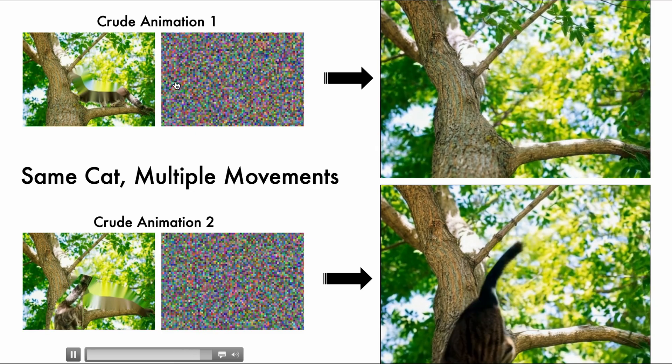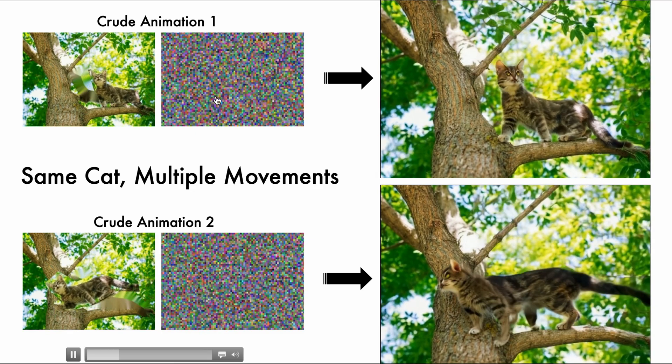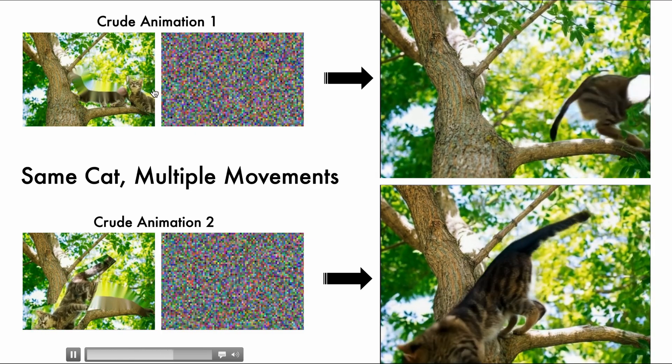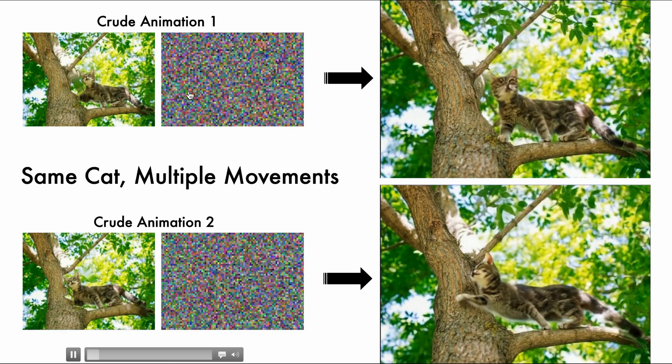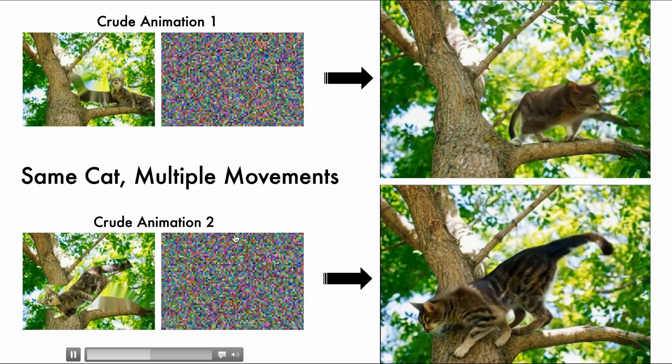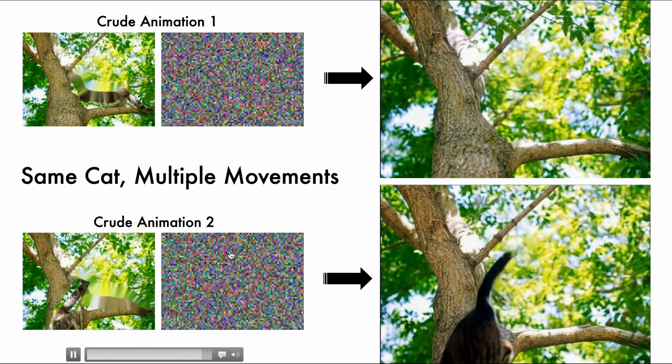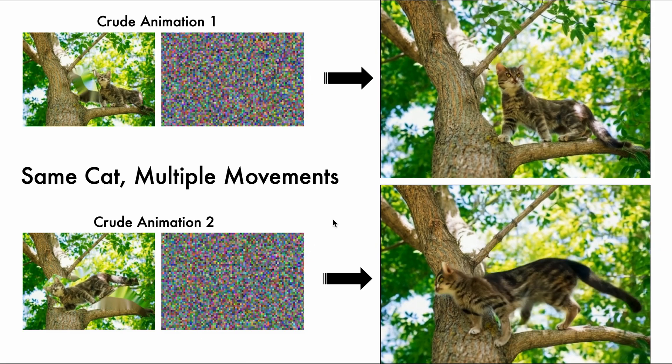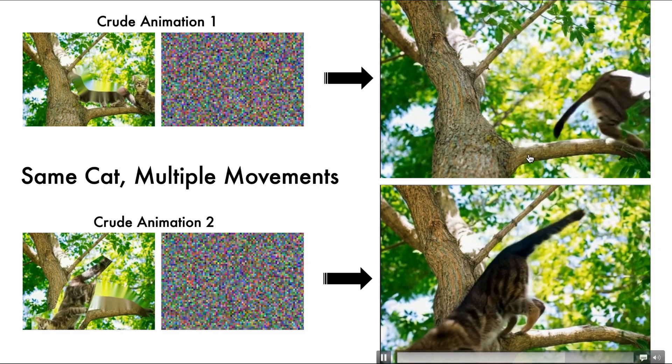And we can control the direction of the cat by dragging it from left to right or from top to bottom to get two different animations.